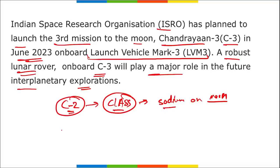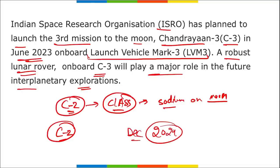Chandrayaan-2's first attempt to land a rover on the moon failed when the Vikram lander crashed on the moon's surface on 6th September 2019. Pragyan was the rover on board Chandrayaan-2 that was destroyed during the Vikram lander's landing. Gaganyaan is India's main crewed space mission, expected to be launched in December 2024. ISRO's chairman is S. Somnath and its headquarter is in Bengaluru, Karnataka.